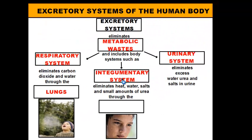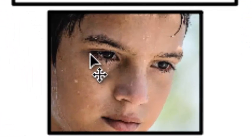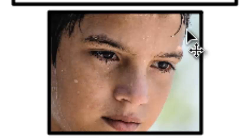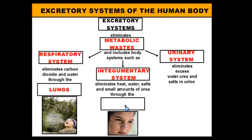Second, we have the integumentary system, which is made up of your nails, hair, and skin. The integumentary system eliminates heat, water, salt, and small amounts of urea. To get rid of these wastes — water and salts — that's going to be sweat. So when we sweat, we're actually getting rid of metabolic wastes produced by our cells, through the skin. Even though sweating is designed to cool us off, we get a double function out of it by also getting rid of metabolic wastes.